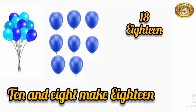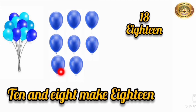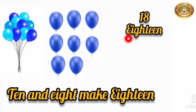The next number which comes after 17 is 18. Let's count these balloons: 1, 2, 3, 4, 5, 6, 7, 8. Here we have 1 ten, and here we can see 8 more balloons. So 10 and 8 make 18. The spelling of 18 is E-I-G-H-T-E-E-N. 18.